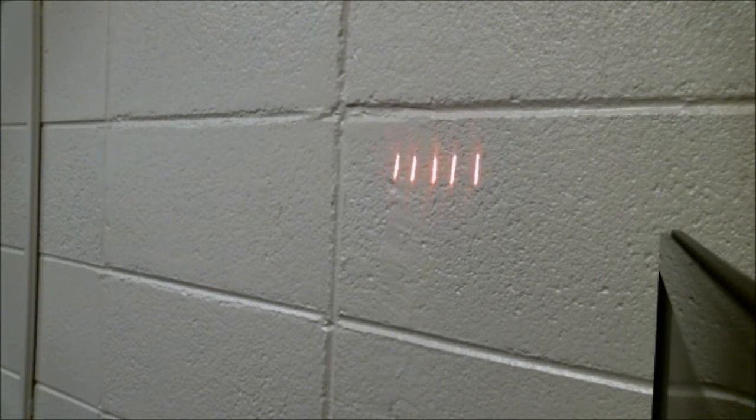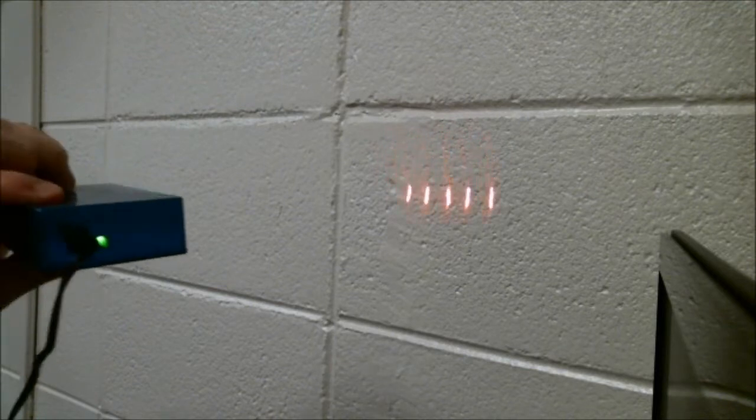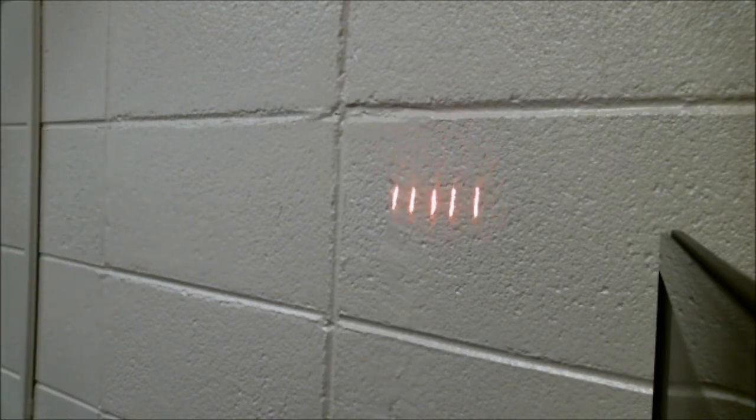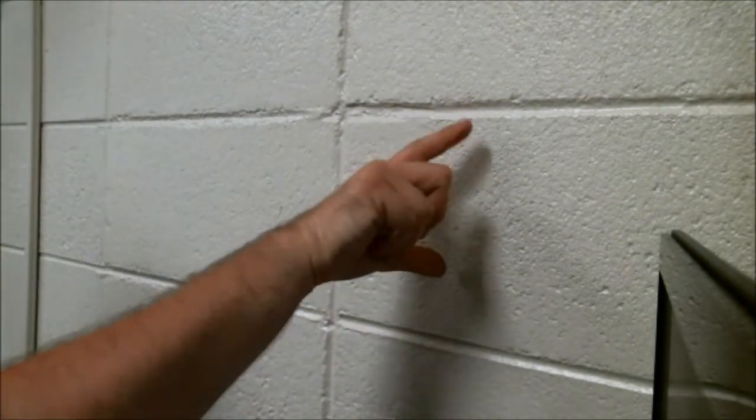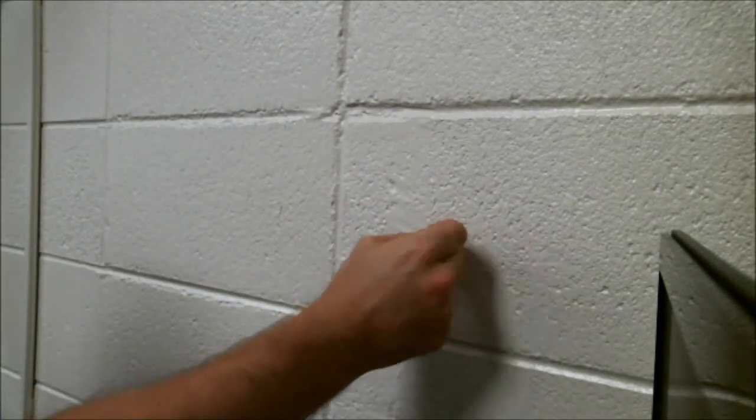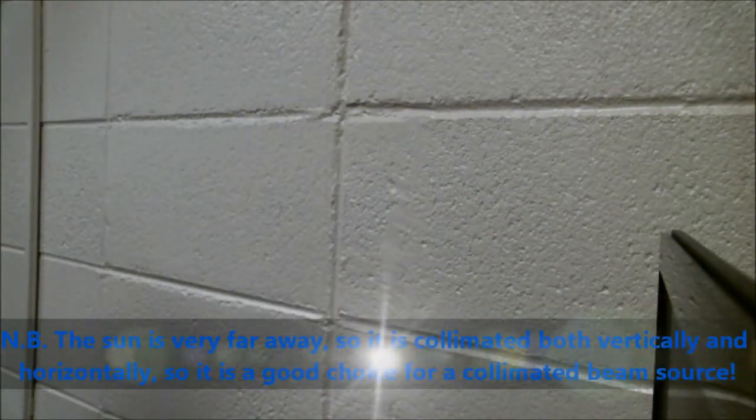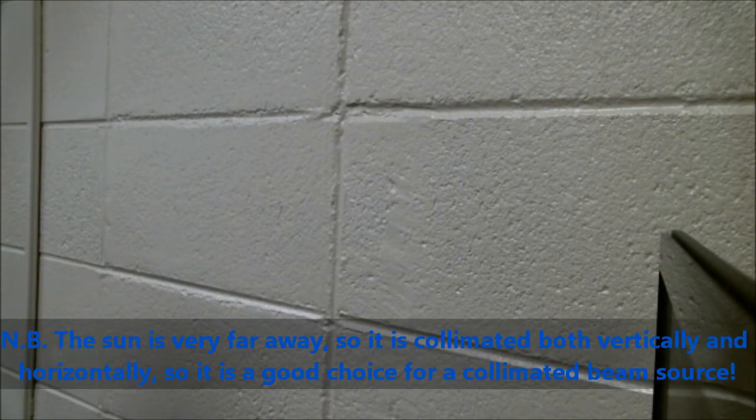So you see that they're all sort of equally spaced. If I move in closer, move farther away, the beam maybe diverges vertically, but they're not diverging horizontally. So horizontally, these are collimated beams. Vertically, maybe not so much.